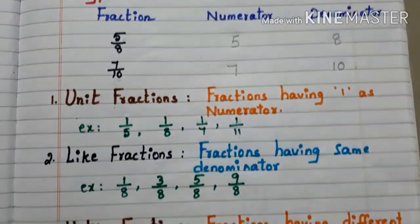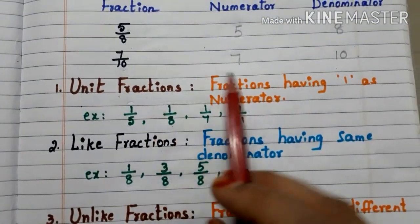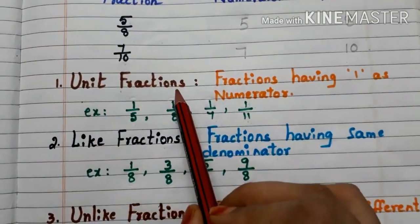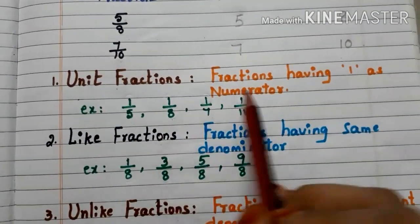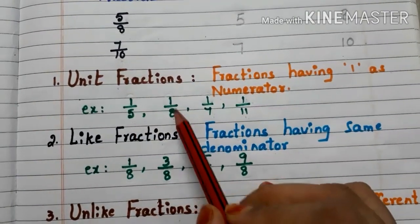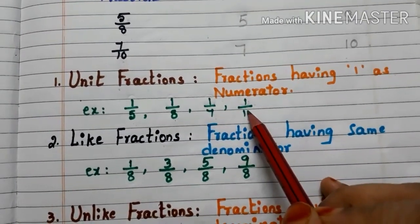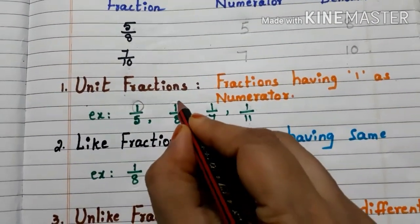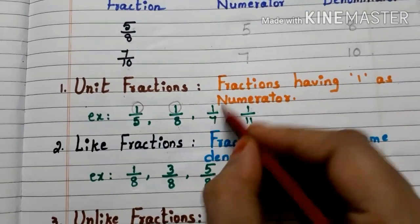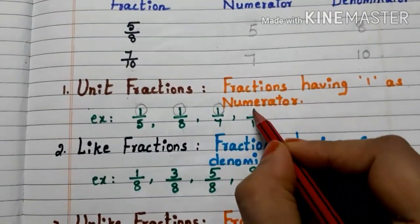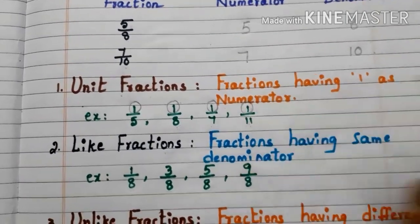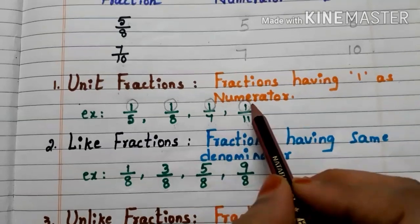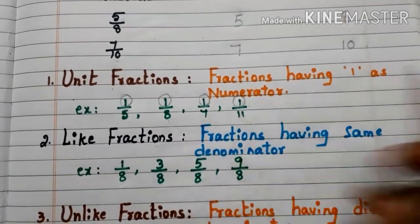Now let us move to the types of fractions. Unit fractions. Fractions having 1 as numerator are called unit fractions. Here we have some examples: 1 by 5, 1 by 8, 1 by 7, and 1 by 11. In each of these, the numerator is 1. So these all fractions have 1 as the numerator, and these type of fractions are called unit fractions.